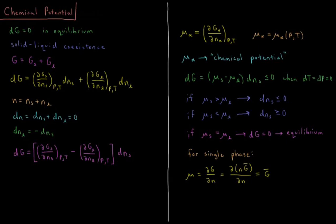This video will discuss chemical potential and chemical thermodynamics. We've mentioned previously that in equilibrium the Gibbs energy change during a process is equal to zero. For example, during solid-liquid coexistence in a phase diagram, the total Gibbs energy of our substance is the Gibbs energy of however many solid particles we have plus the Gibbs energy of whatever particles are liquid. The solid and liquid can coexist and along the coexistence curve they are in equilibrium with one another.